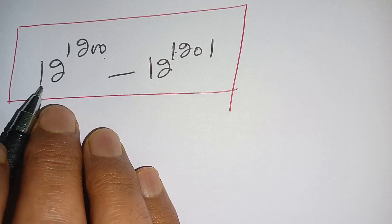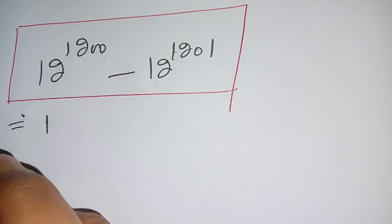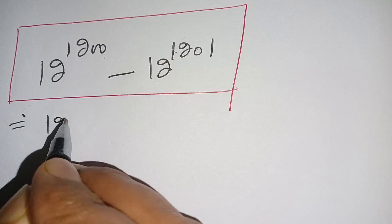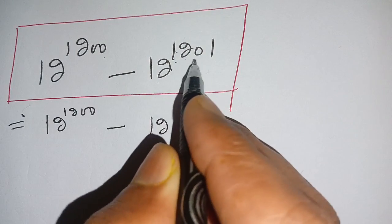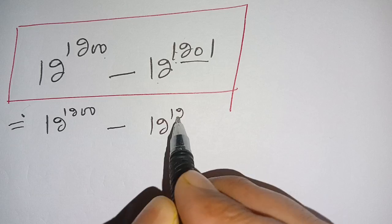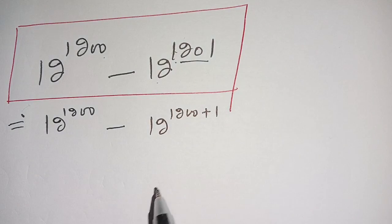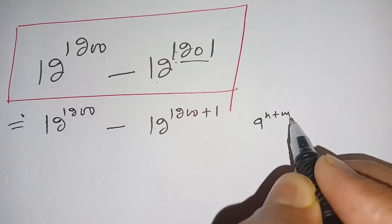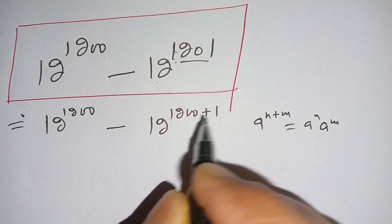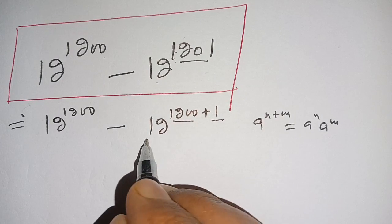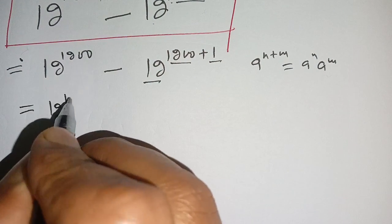Let's simplify the expression 12 power 1200 minus 12 power 1201. We can rewrite 12 power 1201 as 12 power 1200 plus 1. We know the identity: a power n plus m equals a power n times a power m. Here, a is 12, n is 1200, and m is 1.